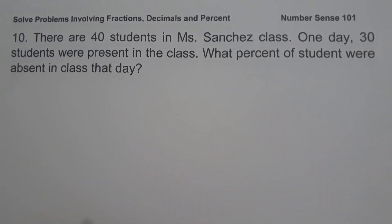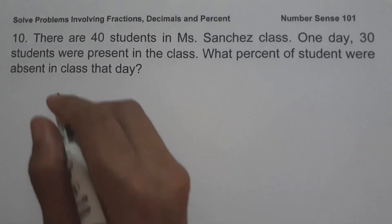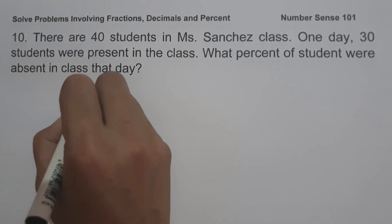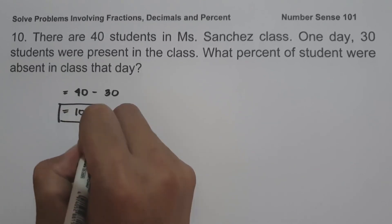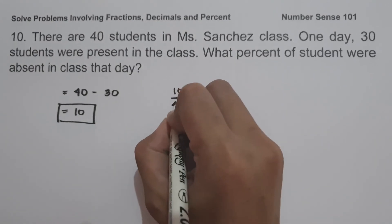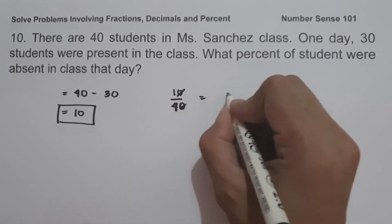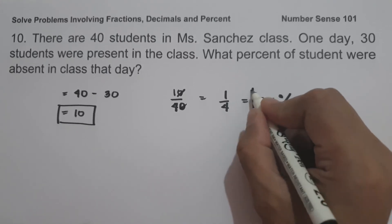On our last example, there are 40 students in Ms. Sanchez's class. One day, 30 students were present. What percent of students were absent? Since 40 students total and 30 were present, 40 minus 30 is 10 absent students. Writing this as a fraction: 10 over 40, which simplifies by canceling the zeros to 1 over 4. And 1 fourth as a percentage is 25%, and this will be our answer.